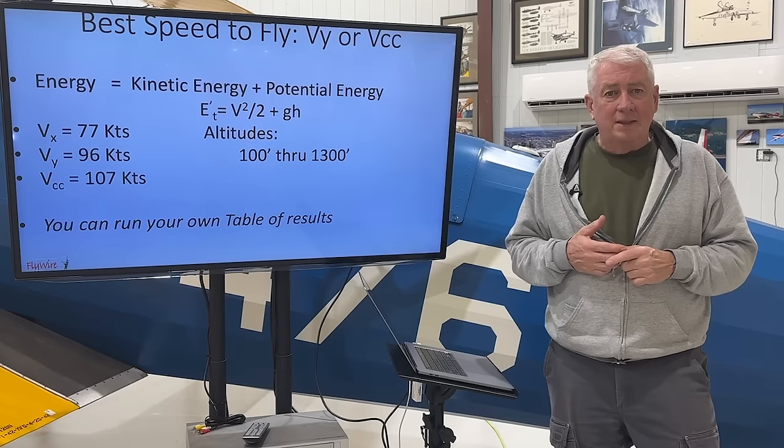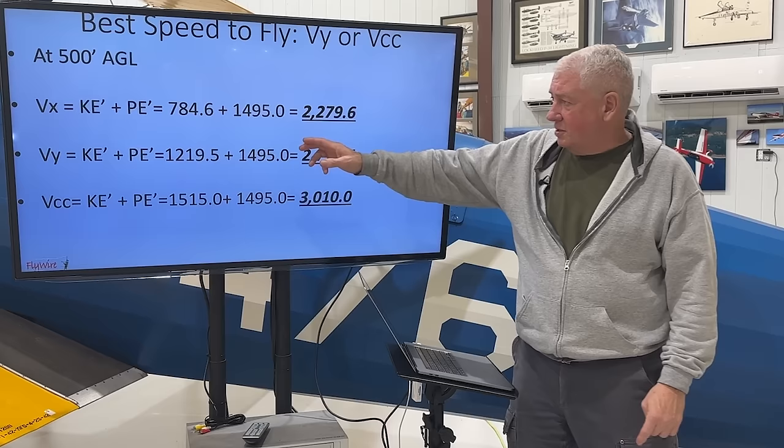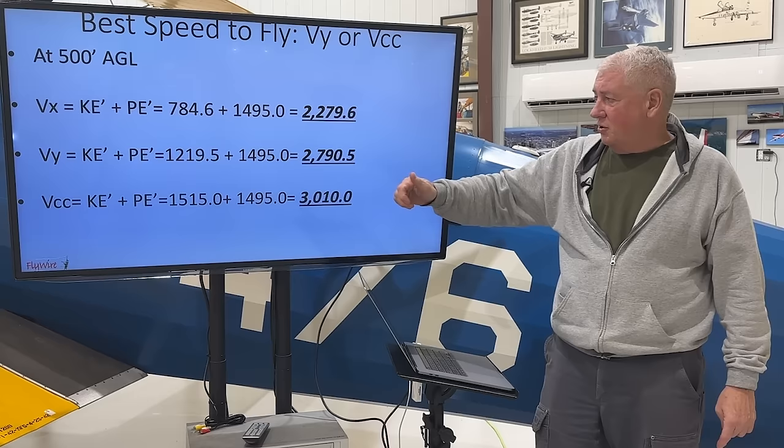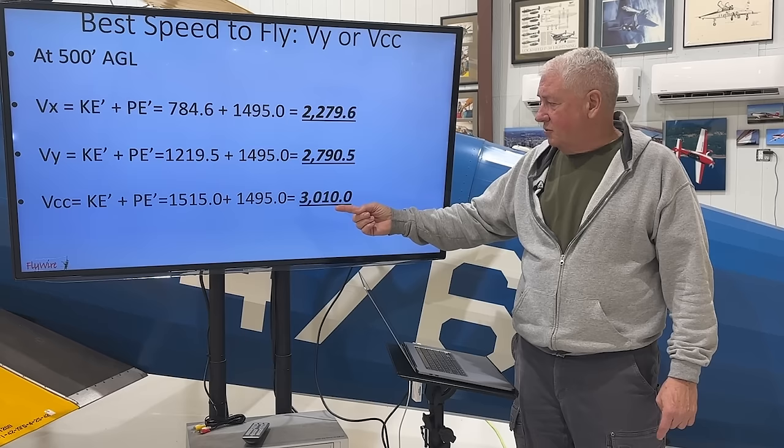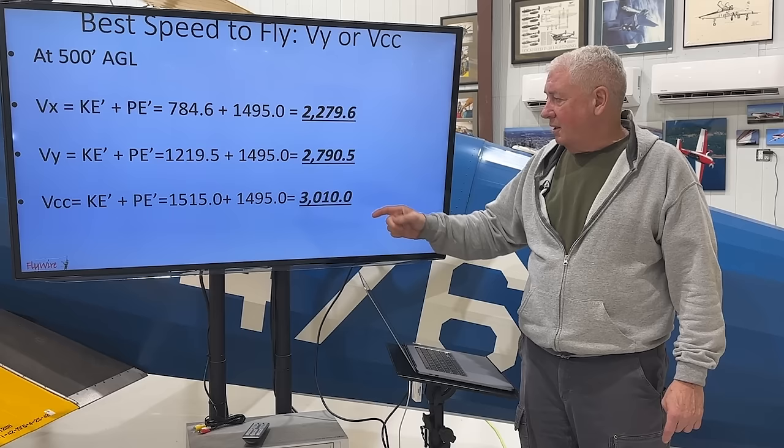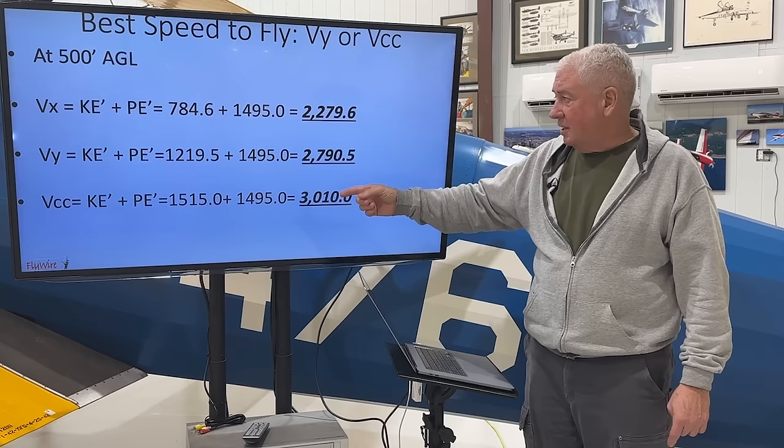So we look at this difference here. This is VX, VY, and cruise climb — that's the kinetic energy. We can see the potential energy is the same; it's all at 500 feet AGL. The difference here is cruise climb — it is significantly more than VY. In fact, it's 24% better, and it's 93% more than the VX climb.